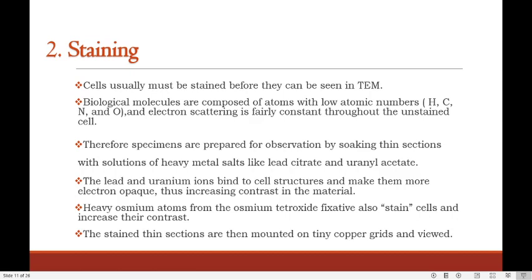The cells are usually stained before they can be seen in transmission electron microscope. Biological molecules are composed of atoms with low atomic numbers, so electron scattering is fairly constant throughout the unstained cell. Therefore, specimens are prepared by soaking thin sections with solutions of heavy metal salts like lead citrate and uranyl acetate. The lead and uranium ions bind to cell structures and make them more electron-opaque, increasing contrast. Heavy osmium atoms from the osmium tetroxide fixative also stain the cell and increase their contrast. The stained thin sections are then mounted on tiny copper grids.